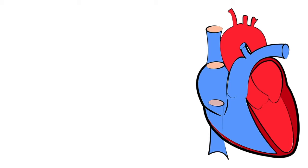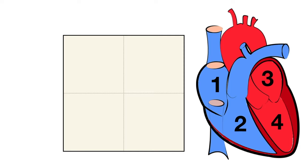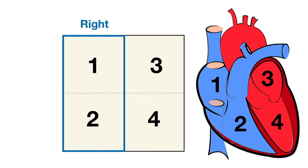Let's start with the chambers of the heart. There are four main chambers labeled one through four on the diagram. To simplify this, we're going to turn the heart into a square divided into four boxes representing the chambers. The heart can be divided into two sides: the right side shown in blue, which includes chambers one and two, and the left side shown in red, which includes chambers three and four.